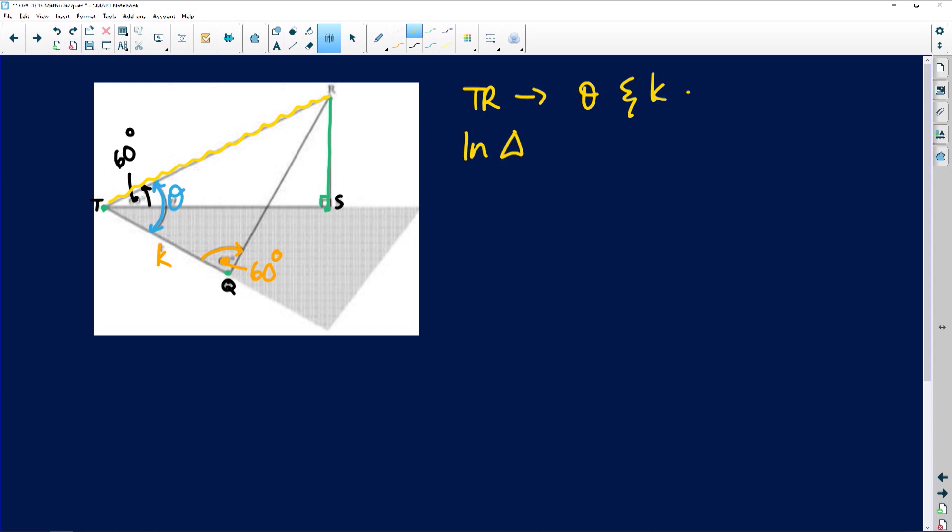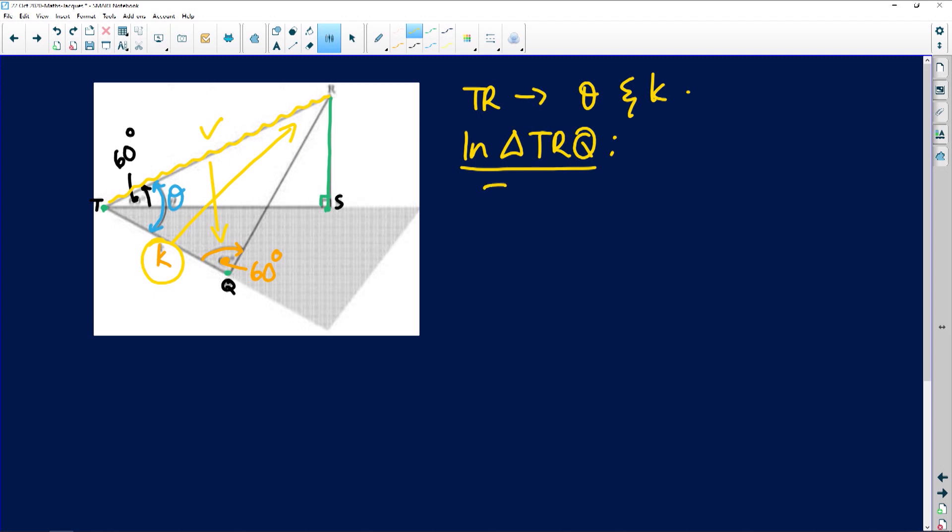And you know what, I want this, do I have the angle opposite to it? Yes I do. I have this side, do I have the angle opposite to it? Yes. So I'm going to use my sine law because the information is crossing. So TR over the sine of 60 down here is equal to k over the sine of 180 degrees minus theta minus 60.